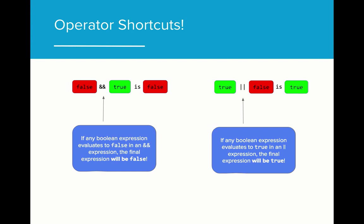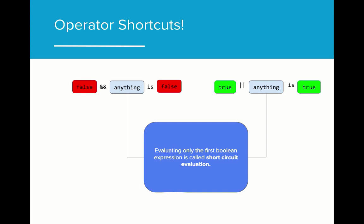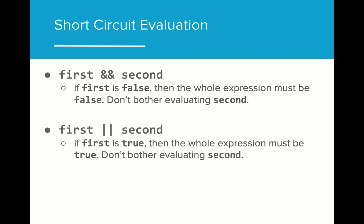Because AND expressions evaluate to false if any condition is false, and OR will evaluate to true if any condition is true, there is a shortcut we can utilize to make our programs run more efficiently. If the first value of a Boolean expression is false in an AND operation, or the first value is true in an OR operation, the remaining conditions are irrelevant. Because these expressions will always evaluate to false and true respectively, regardless of what the other expression evaluates to, Java will not evaluate the second expression. This process of skipping the second condition in a Boolean expression is called short-circuit evaluation. For AND expressions, if the first condition is false, we don't bother evaluating the second condition because we know the expression will evaluate to false. For OR, if the first expression is true, we don't evaluate the second because we know the expression will evaluate to true.